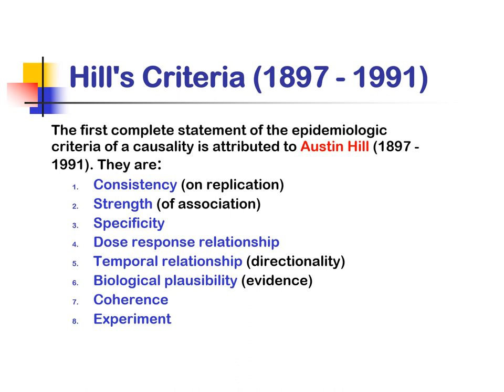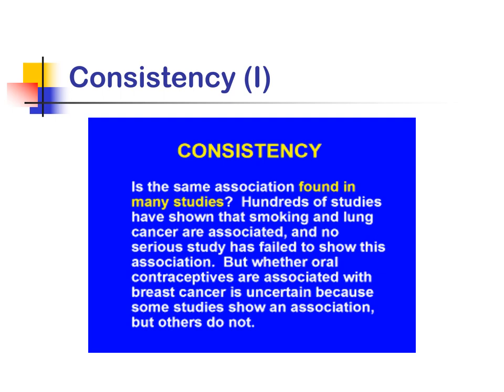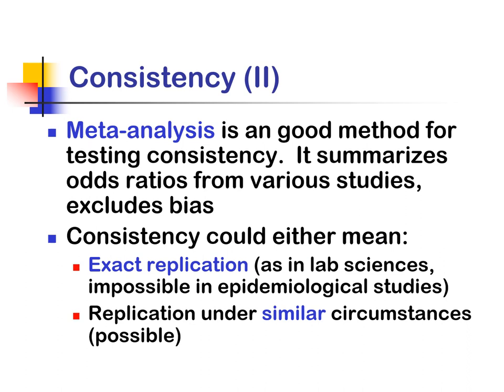Hill's criteria, on the other hand, bases its criteria on consistency, replication, strength of association, specificity, dose-response relationship, temporal relationship, biological plausibility, coherence, and experiment. Consistency asks: is the same association found in many studies? Hundreds of studies have shown that smoking and lung cancer are associated, and no serious study has failed to show this association. Whether oral contraceptives are associated with breast cancer is uncertain because some studies show an association but others do not. Meta-analysis is a good method for testing consistency, summarizing odds ratios from various studies which exclude bias. Consistency could mean either exact replication or replication under similar circumstances.